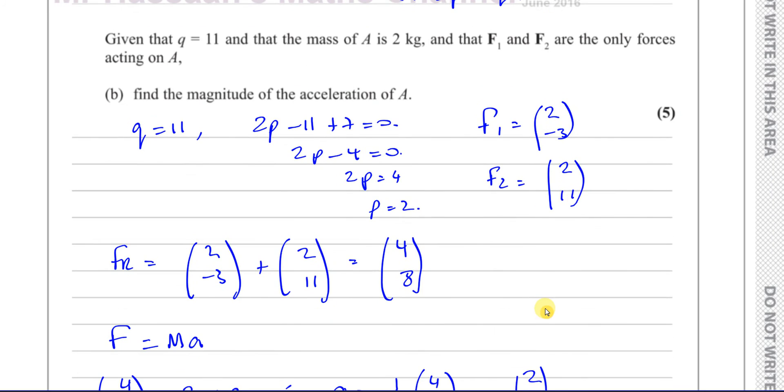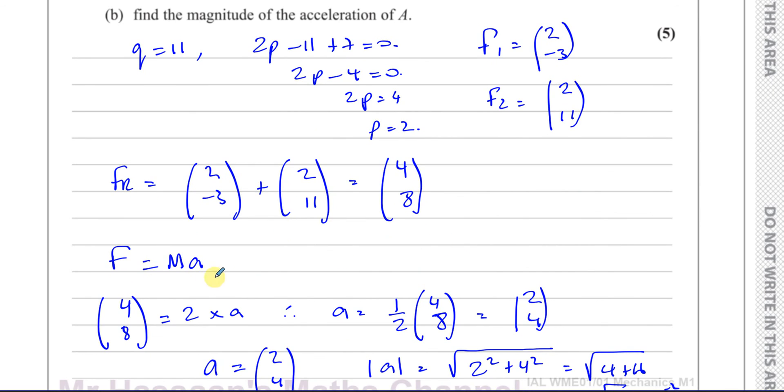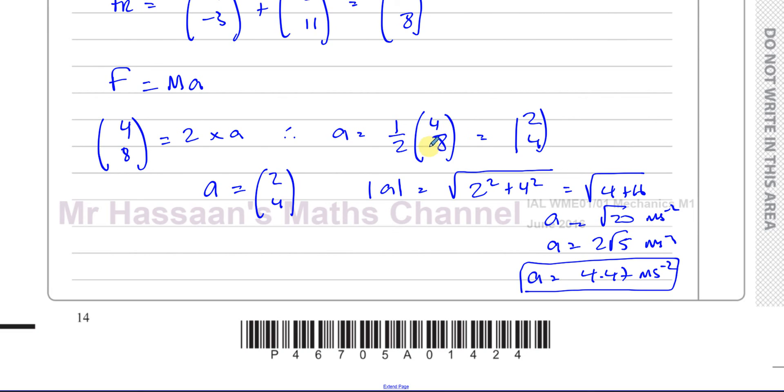And then once we know what P and Q are, we can find the resultant force. We know that force is mass times acceleration, so the acceleration is force divided by the mass. We've got the acceleration vector and we need to find the magnitude of it, and we found it. Simple as that.